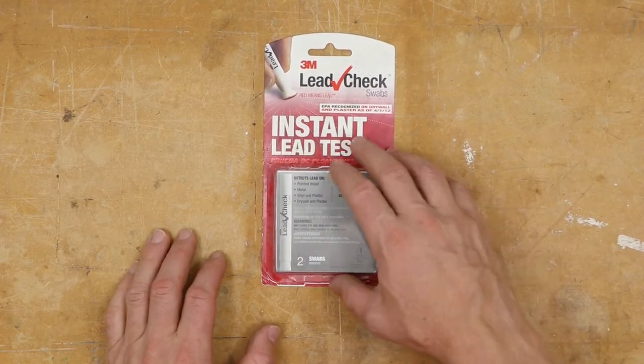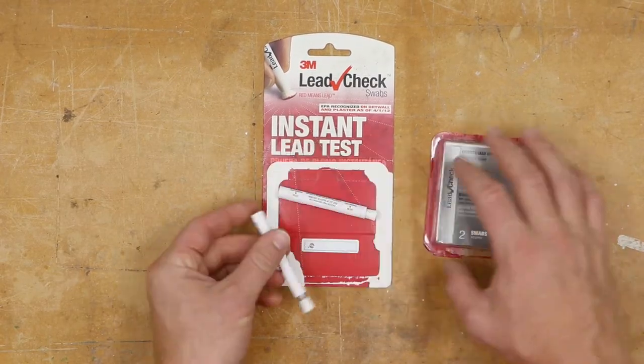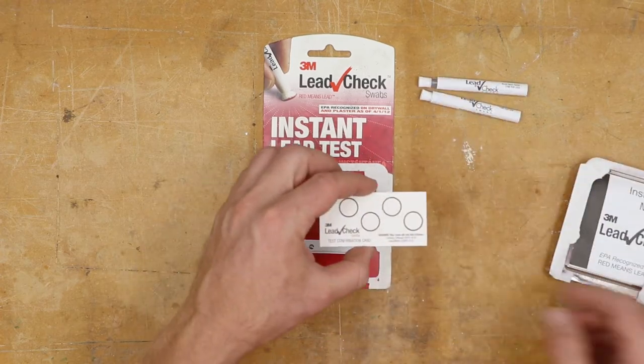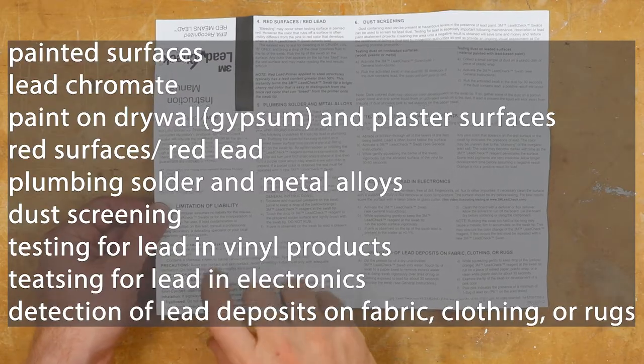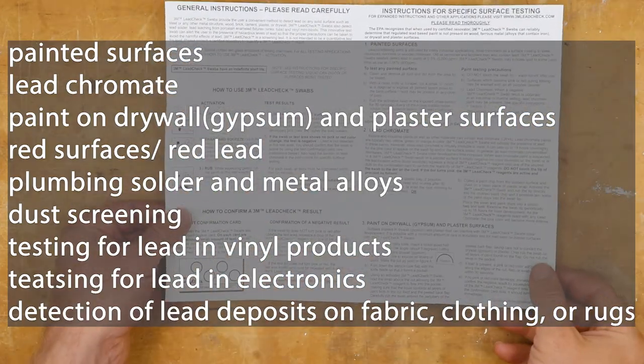Let's check out what we get inside the packet. Two swabs, a lead check card, and instructions. The instructions detail use in nine different situations.